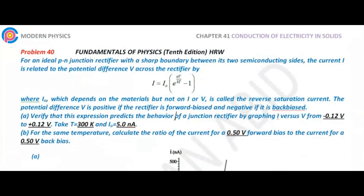Verify the expression that predicts the behavior of the junction rectifier by graphing I versus V from minus 0.12 V to positive 0.12 V. The temperature is 300 Kelvin and I_0 is 5 nanoamperes.